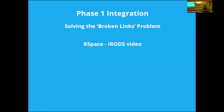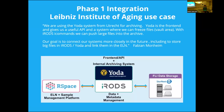So that's what we've done so far. I'd like to float some ideas for next phases of the integration — really just to get feedback. Later today, Laszlo and I are going to do a lightning talk. We already have a use case at the Leibniz Institute for Aging. As Fabian Monheim notes, using the Yoda system from Utrecht for archiving — Yoda is the front end and gives a useful API and a system where you can freeze files — with iRODS commands we can push large files into the archive. The goal is to connect our systems more closely, including to store big files in iRODS/Yoda and link them in the ELN.